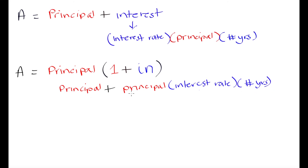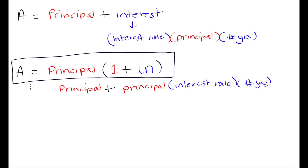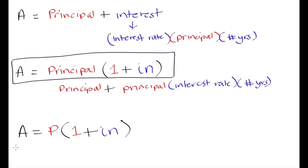So the formula A = P(1 + in) is what you will use to calculate simple interest, and you will be using it many times. It is often referred to as the 'APIN' formula — A for the total amount, P for principal, I for interest rate, and N for number of years. The formula is usually written with P abbreviated rather than the full word 'principal': A = P(1 + in).